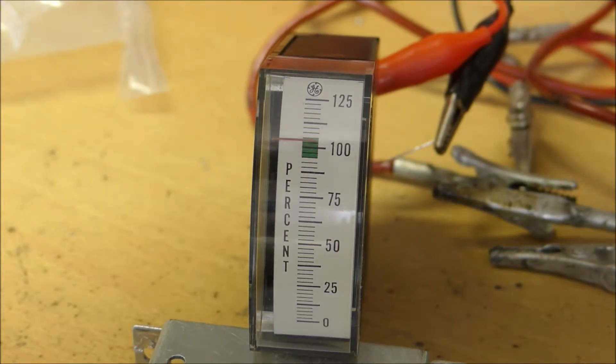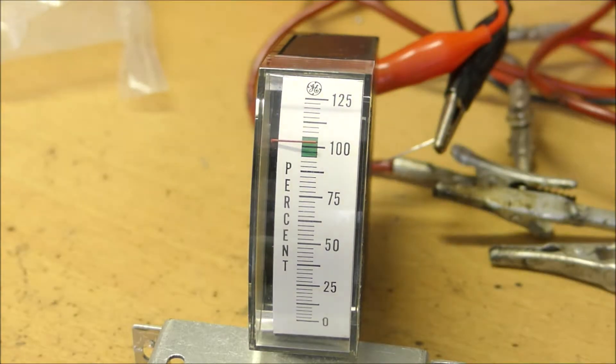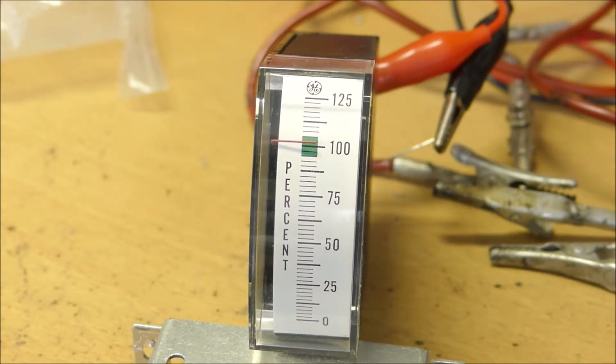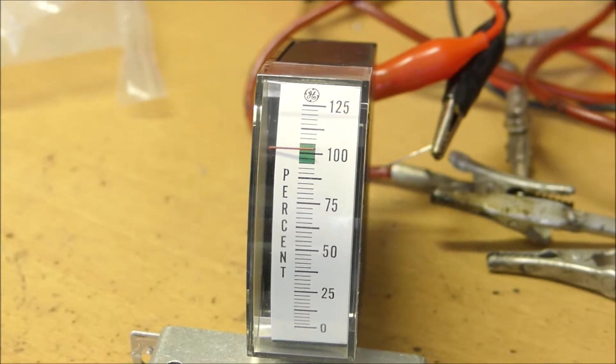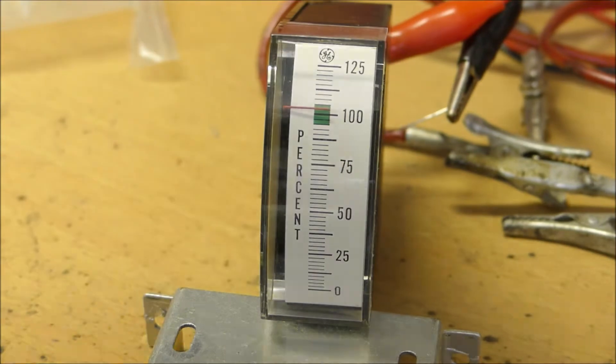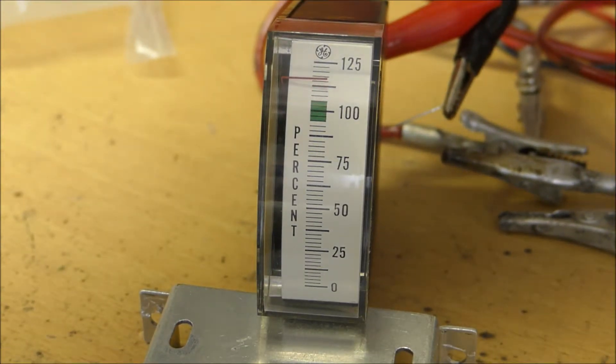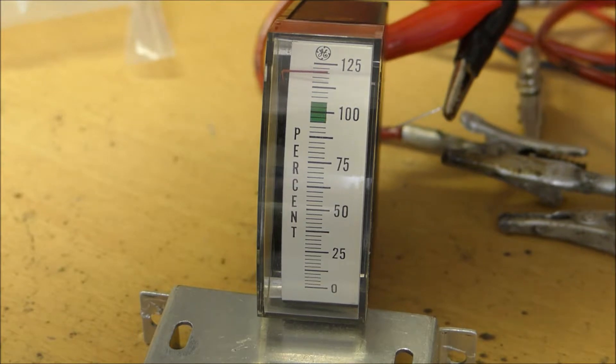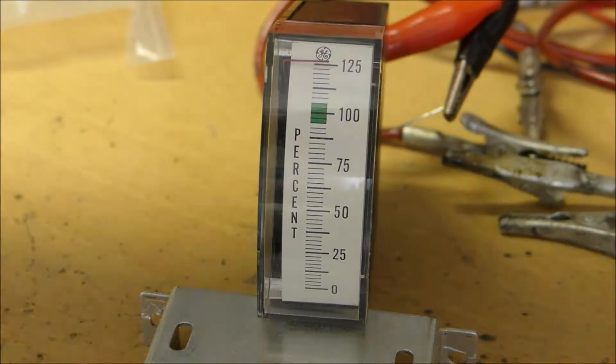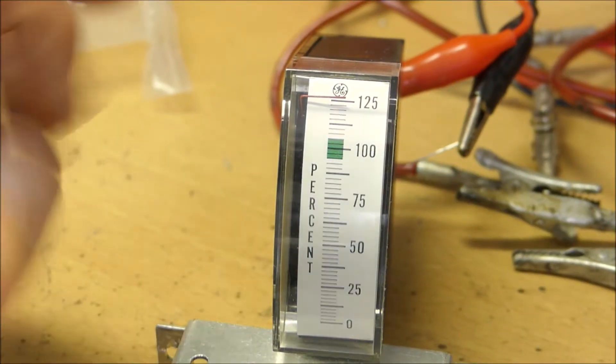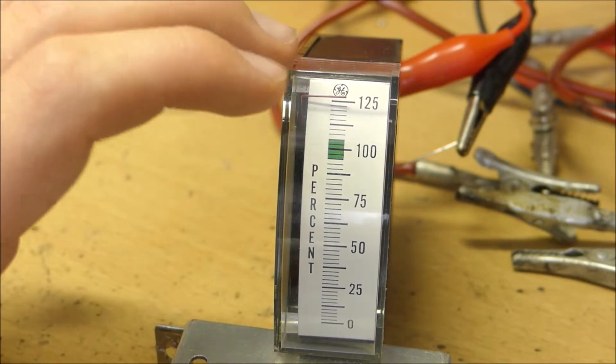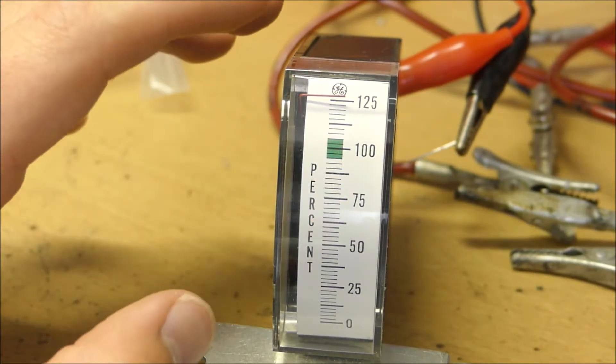The voltage on my power supply right now is 8.83 volts while the voltage on here is a hundred percent. So once this reaches 10 volts we should be at approximately 125. As you can see, the tolerances are slightly off because we're at 10.64 volts and this meter is at 125. But this just goes to show that this works pretty well.